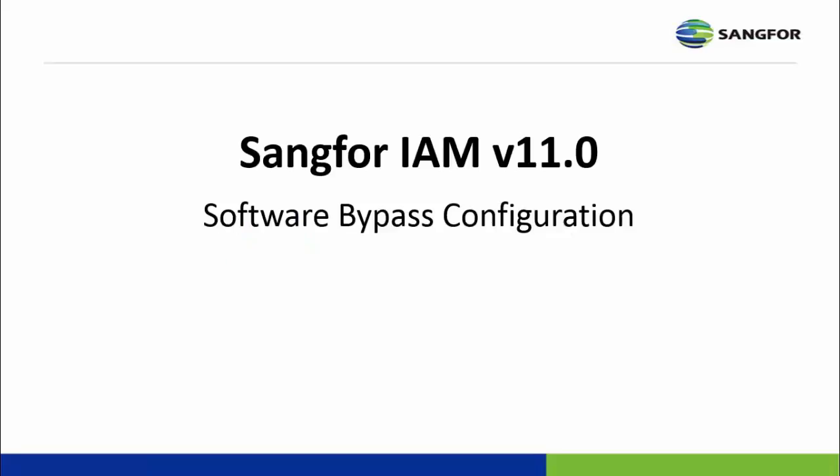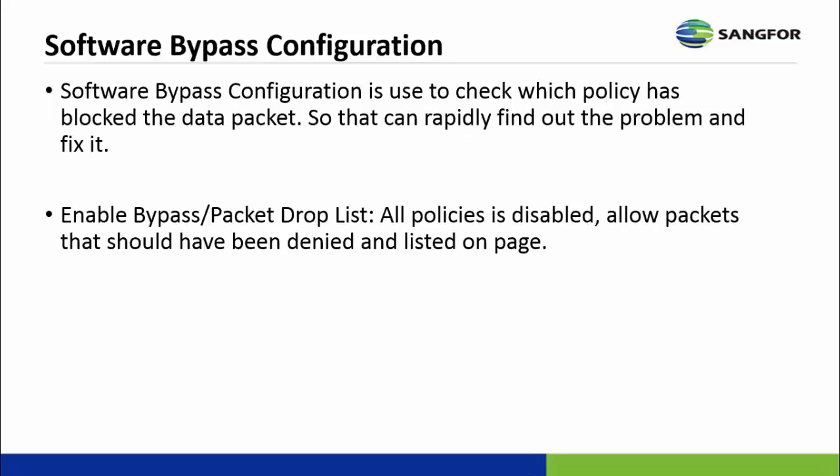Today I would like to talk about IAM bypass configuration. The software bypass configuration is used to check which policy has blocked the data packet, so that you can rapidly find out the problem and fix it.